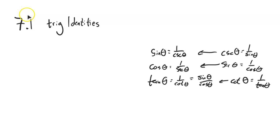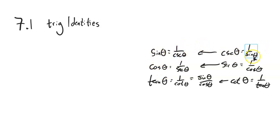This is Math 142. We are taking a look at section 7.1 for trig identities. The first thing I want to remind you about are these relationships: sine is the same as 1 over cosecant, and cosecant is the same as 1 over sine. These are called reciprocal identities, because you flip the fraction. Tangent to cotangent, etc. Tangent is also sine over cosine.